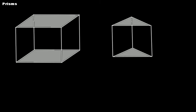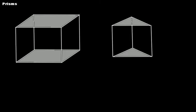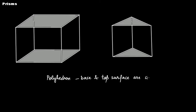Let's learn about prisms and pyramids. In the case of a prism, a prism is a polyhedron whose base and top surface are congruent polygons, meaning they are of exactly the same size and shape.